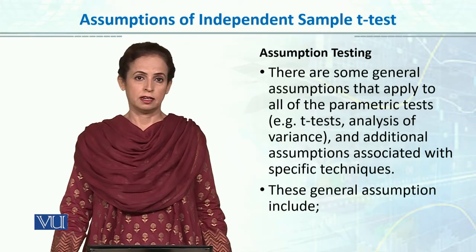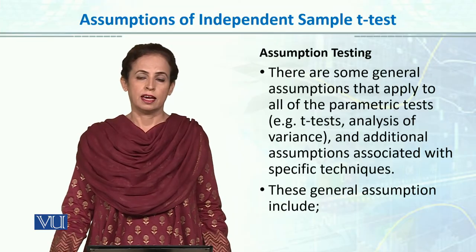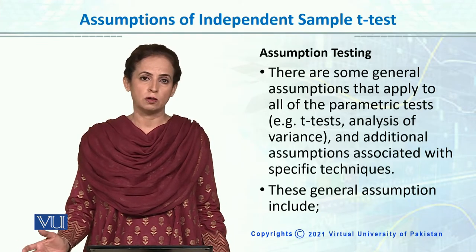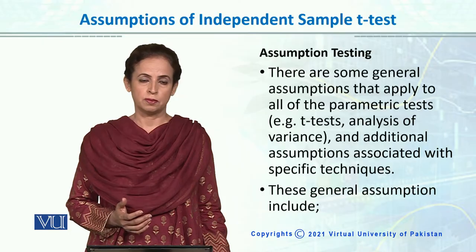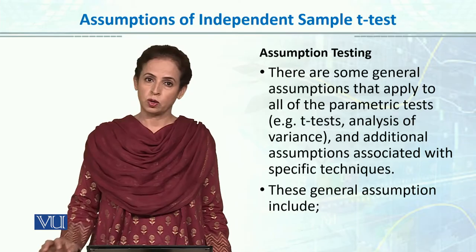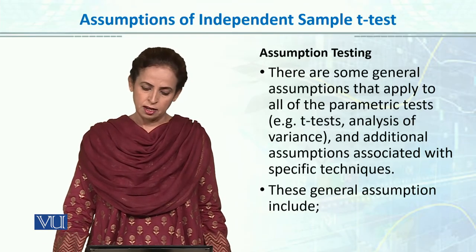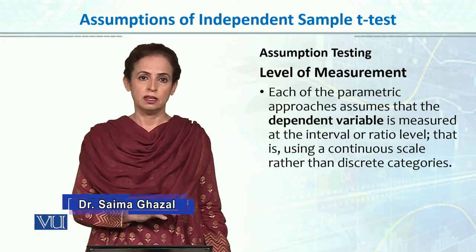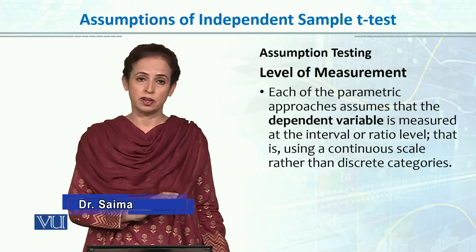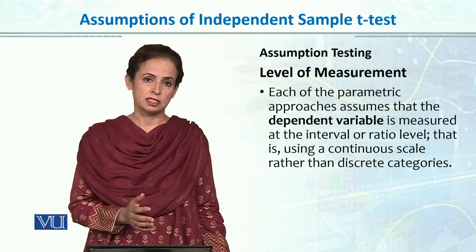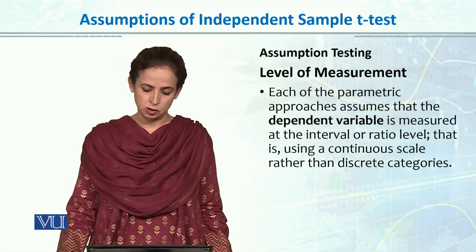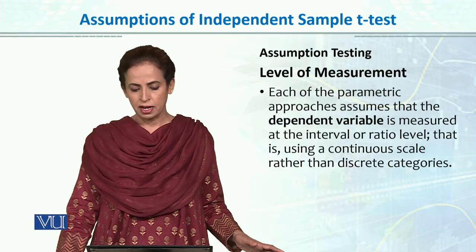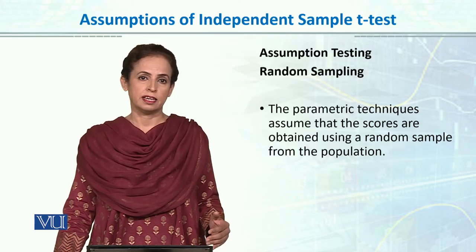We have talked about assumptions of parametric tests, assumptions of independent sample t-test, and assumptions of t-test overall. Let's review what the assumptions of parametric tests are. The first assumption is level of measurement — for all parametric tests, for the dependent variable, it should be continuous, interval, or ratio scale — a running score. For independent sample t-test as well, the dependent variable should be interval or ratio scale, quantitative, and continuous.